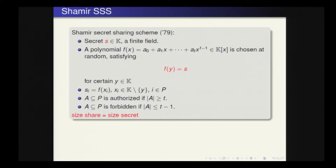In the Shamir secret sharing scheme, the secret is an element from a finite field. To share the secret, a polynomial of degree t minus 1 with coefficients in the field is chosen at random, satisfying that the evaluation of the polynomial at y equals the secret — in the original paper, y was 0. The shares are evaluations of the polynomial. A subset A is authorized if its size is greater or equal than t, and forbidden if its size is at most t minus 1. Both the shares and the secret are elements from the finite field, so the size of the secret equals the size of the shares.